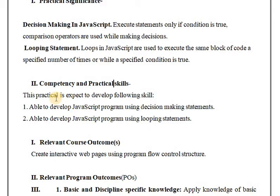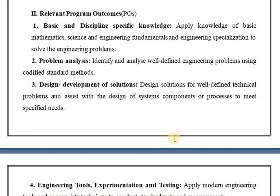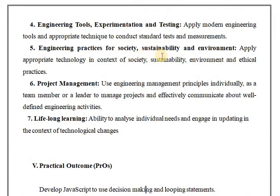This practical expects to develop the following skills: first, being able to develop a JavaScript program using decision-making, and second, being able to develop a JavaScript program using looping statements. The relevant outcome for this practical is to create interactive web pages using program flow control. The relevant program outcomes include basic and discipline-specific knowledge, problem analysis, design and development of solutions, engineering tool experimentation and testing, engineering practices for society, sustainability and the environment, and project management and lifelong learning.